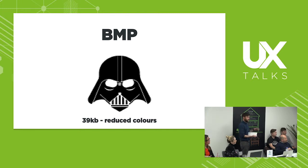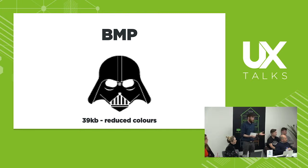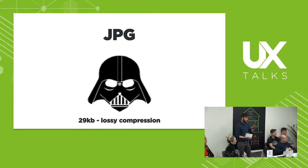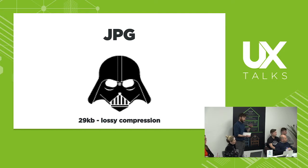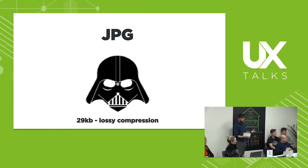BMP, with a reduced colour set, is 39K — which is a bit better. JPEG, using lossy compression, is 29K — we're starting to get artefacts. I've only saved this off once but it's already starting to lose fidelity.